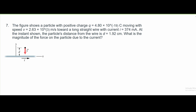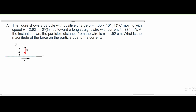At the instance shown in this picture, the particle's distance from the wire, d, is equal to 1.92 centimeters. We are asked: what is the magnitude of the force on the particle due to the current?